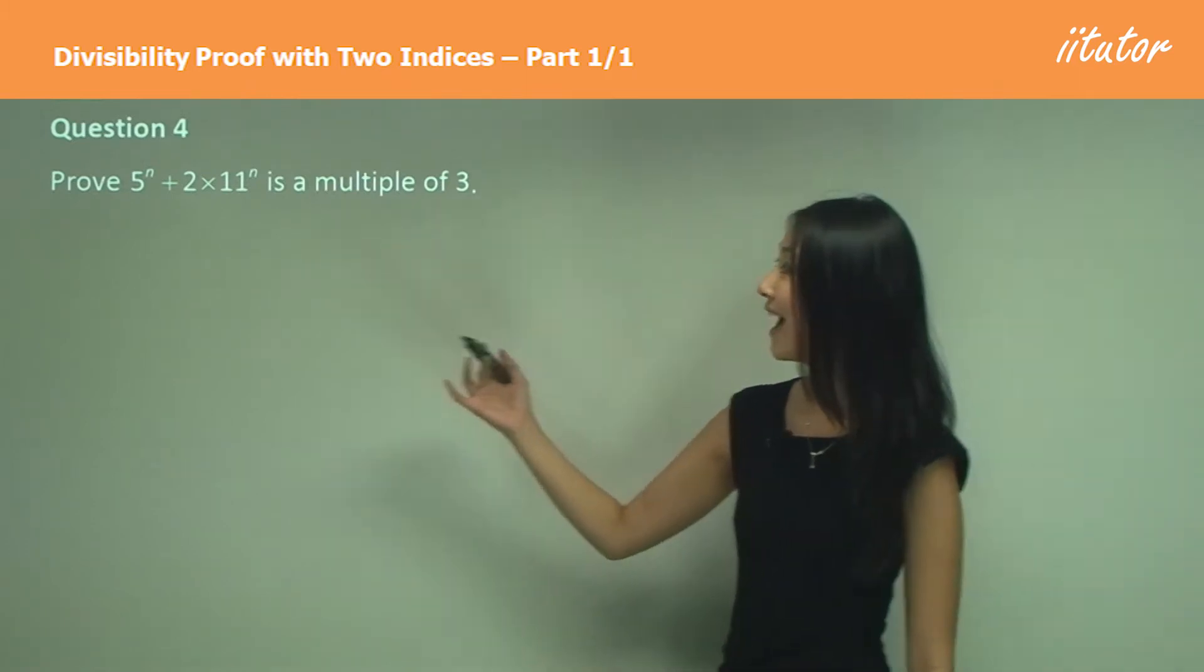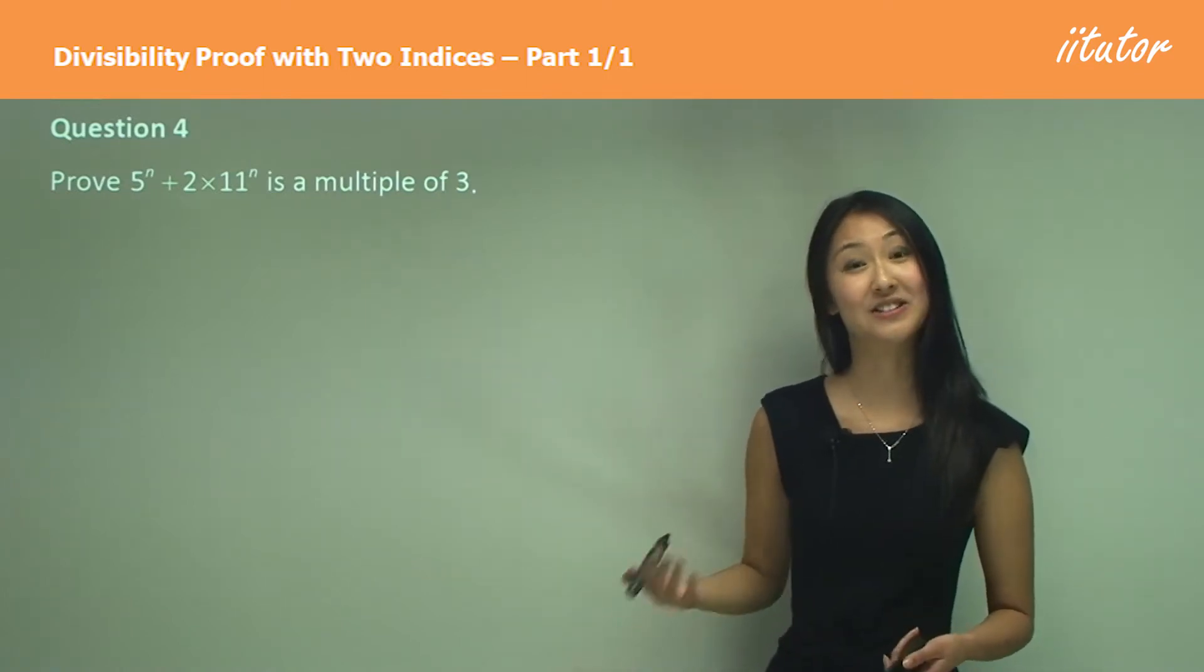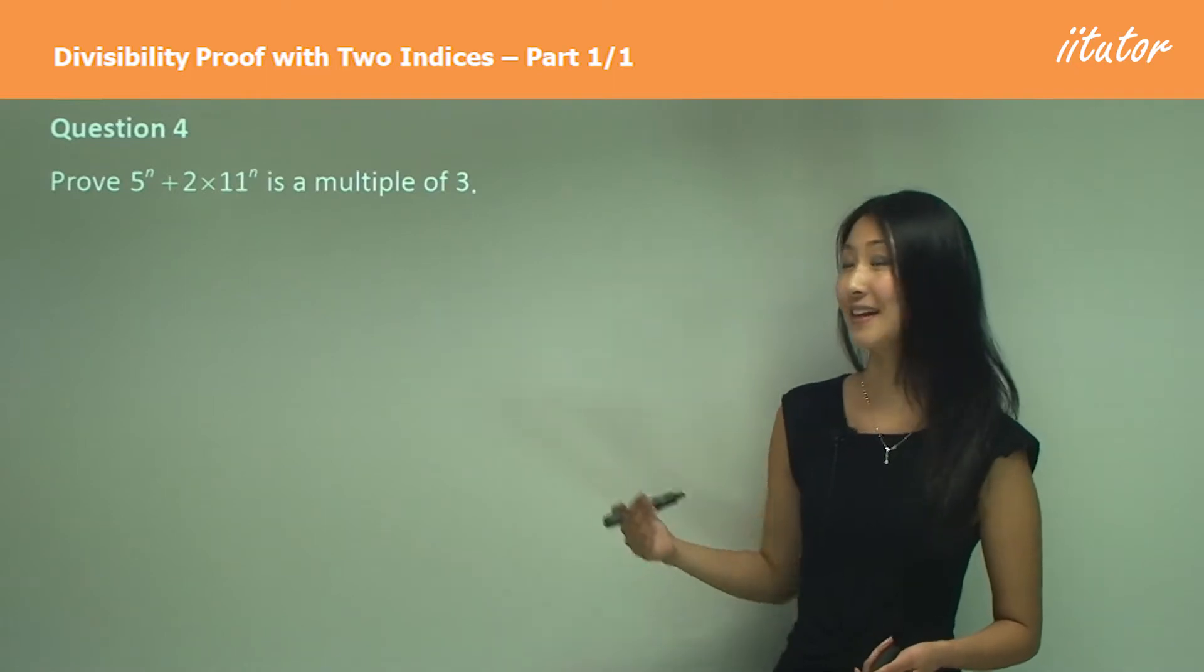You can see that I have two values, 5 and 11, that both have indices. So let's see how that affects the question.